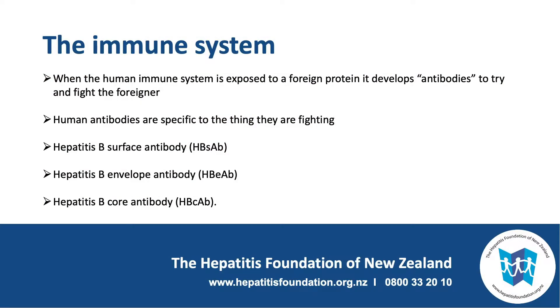The core antigen is not used in routine blood monitoring. From the perspective of the immune system, when affected by foreign entities it develops antibodies specific to what they are fighting. For hepatitis B, the antibodies that can be developed include the hepatitis B surface antibody, the hepatitis B E antibody, and the hepatitis B core antibody.